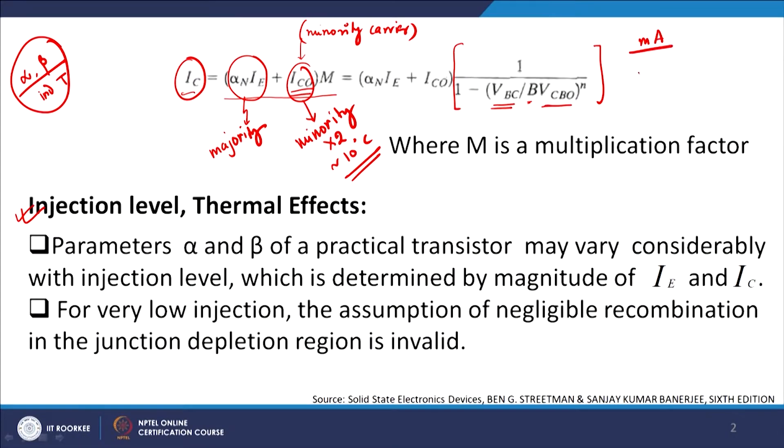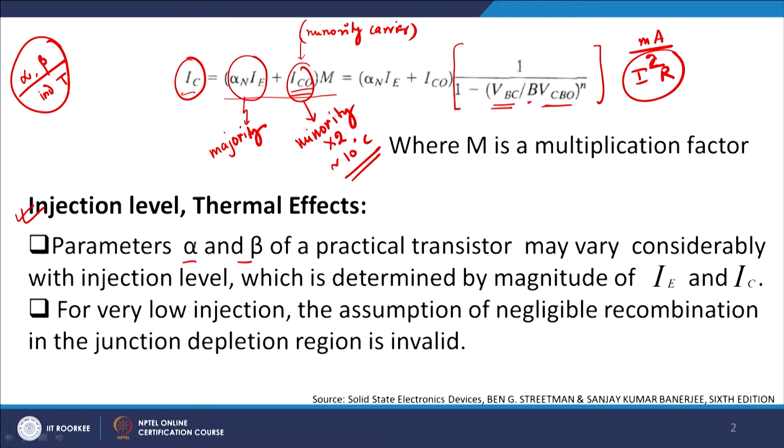Since the collector current is of the order of milliamperes, I²R, which is basically the power dissipation expected from the device, is typically very high. As a result, the on-chip temperature for a bipolar technology based silicon design will be relatively high. So we cannot neglect the effects of thermal variations or thermal changes on the device characteristics.